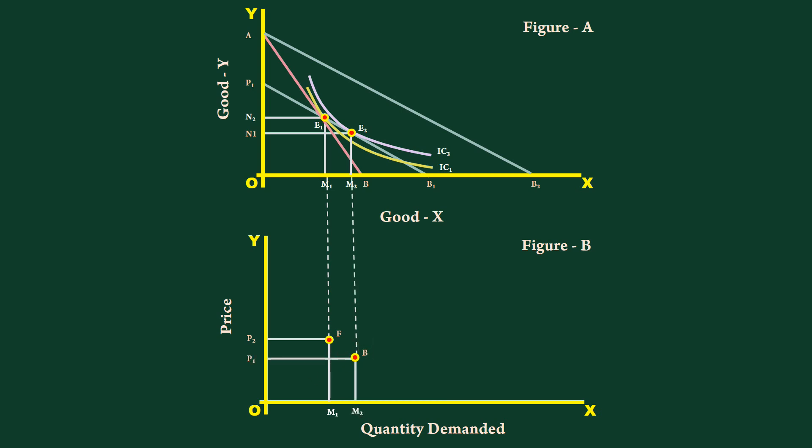Name the point as G. Join these two points. The resultant curve is Slutsky's cost difference demand curve.